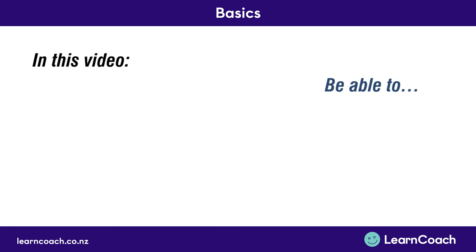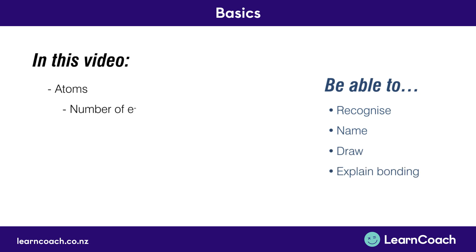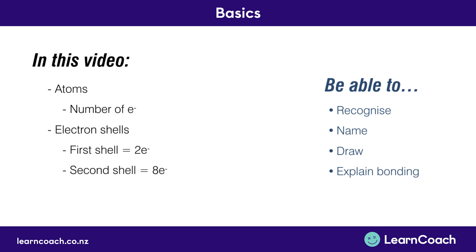So in this video, the key exam question words you should be able to answer are: recognising, naming, drawing, and explaining bonding. We've looked at atoms, the number of electrons they have, and electron shells — the first shell can have a maximum of two electrons and the second shell a maximum of eight. Lastly, we looked at covalent bonding. You should be able to recognise, name, and draw atoms and electron shells, and then explain covalent bonding. That's it for this video — it's been a crash course getting you up to date for what you need to know for the standard.